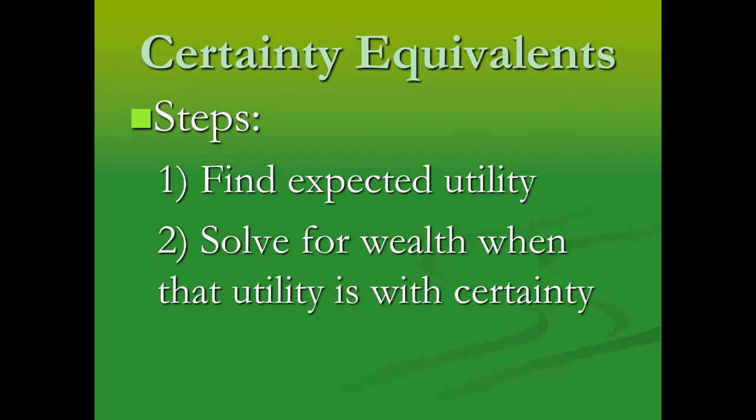We know the probability in this situation is one. There aren't multiple options because we're trying to say: what amount of wealth, when we have certainty, gives us this amount of utility? So what we're doing is moving back into the equation and trying to figure out what payoff from this gamble — with a probability of one — would give us the same utility that we got from the original gamble.